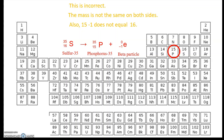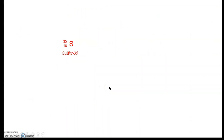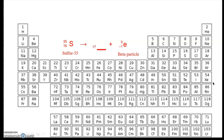The correct approach for sulfur-35 beta decay: ask what minus one equals 16? That gives 17. Element 17 is chlorine. For the mass number: what plus zero equals 35? That's 35. So sulfur-35 decays into chlorine-35. You have to be careful with beta emitters because that minus one in the atomic number can throw people off — but if you're careful, you'll get it right.